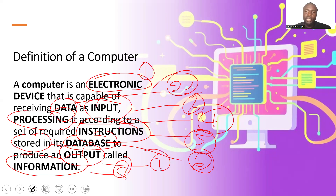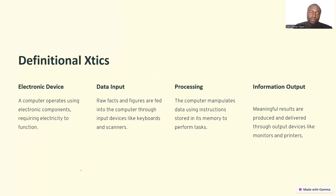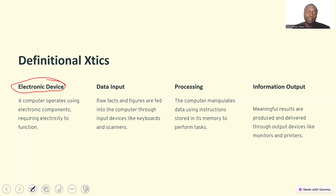It is an electronic device that is capable of receiving data as input, processing that data according to a set of required instructions stored in its database, to produce an output called information. Let's now look at these definitional characteristics bit by bit. When we say it is an electronic device, we mean that a computer operates using electronic components requiring electricity to function.